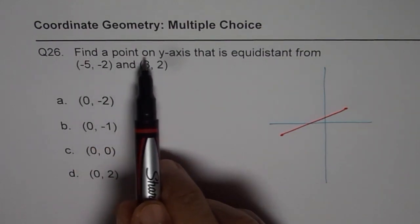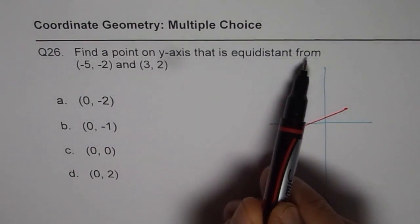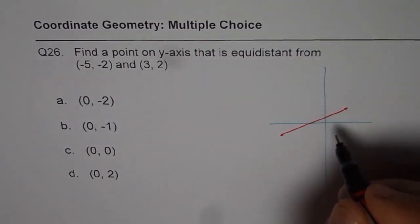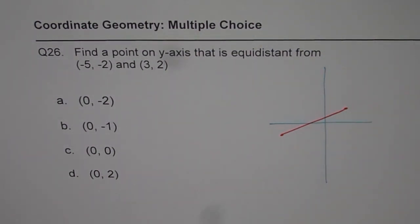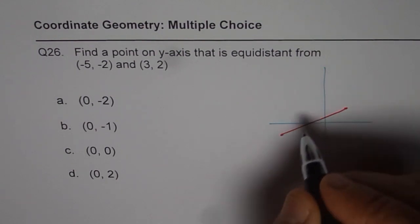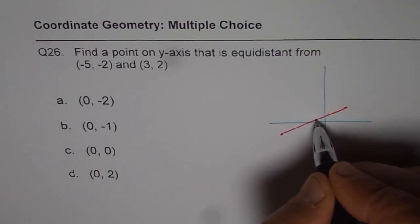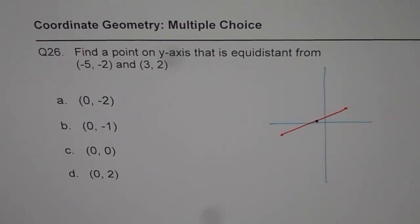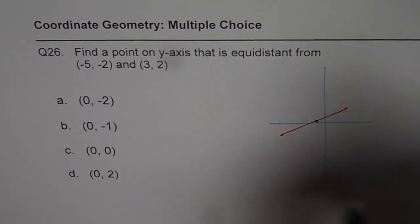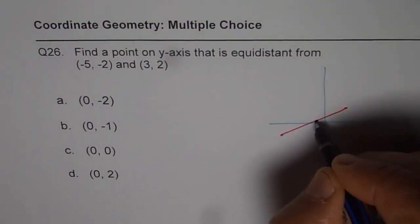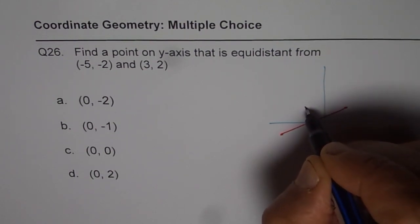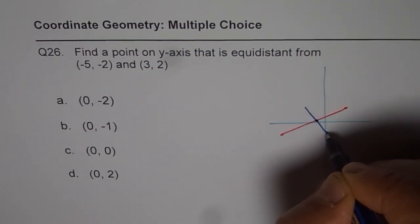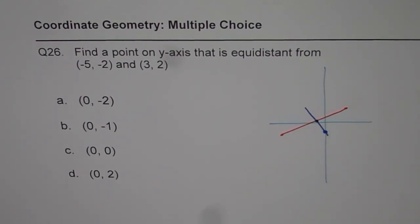Now the question is, find a point on y-axis that is equidistant from these points. So first and foremost, we need to find the midpoint. If a point on y-axis is equidistant, then it has to be on the right bisector of this segment. And then we have to find where this right bisector intersects the y-axis. That is the point of our interest.